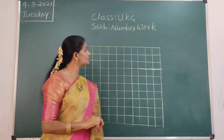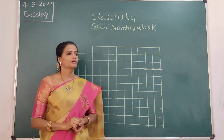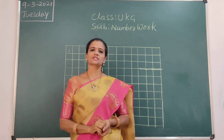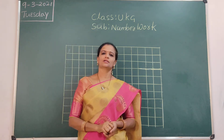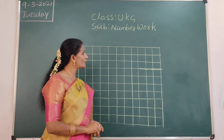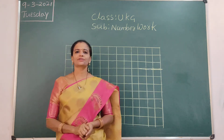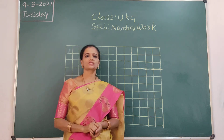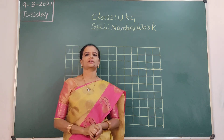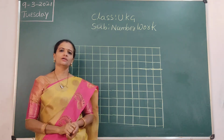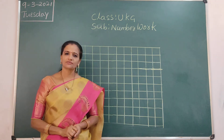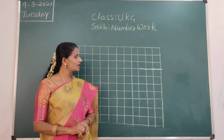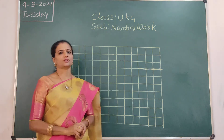Hi children, welcome to UPG subject number 1. In previous class, what we learnt children? Backward numbers. Today we are going to learn 31 to 40 number names. We finished 1 to 30, so today we are going to learn and write 31 to 40. Up to 30 we finished number names, so today we will learn 31 to 40.